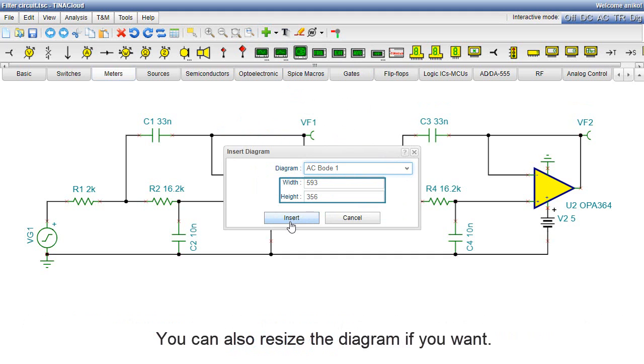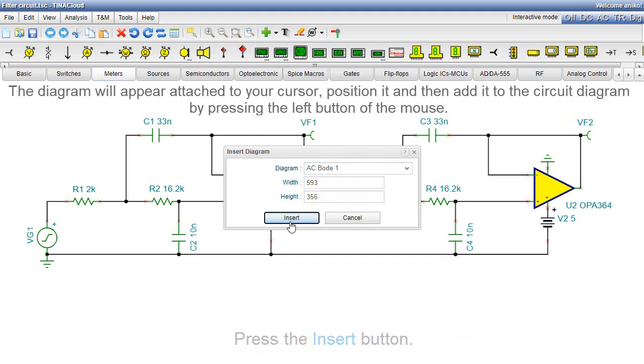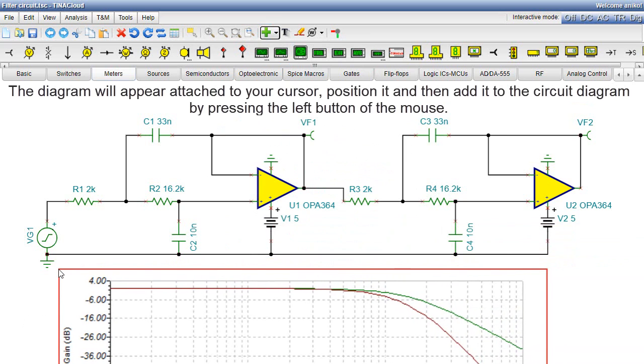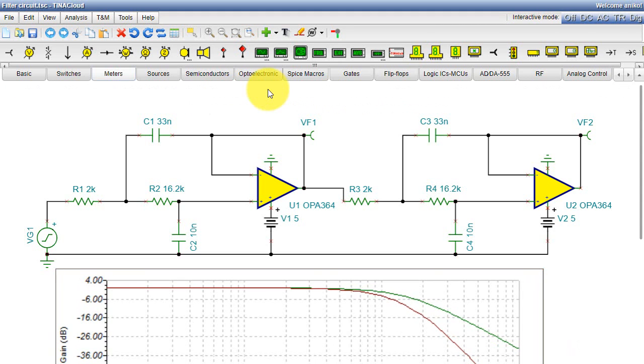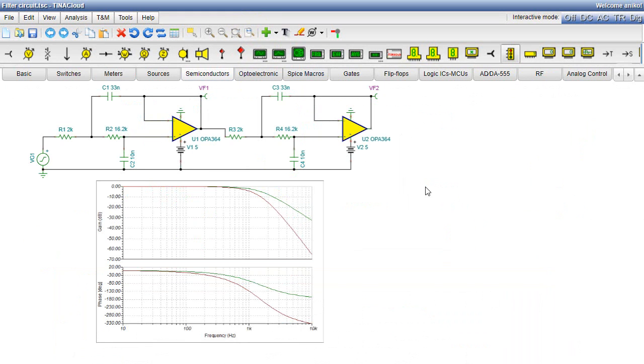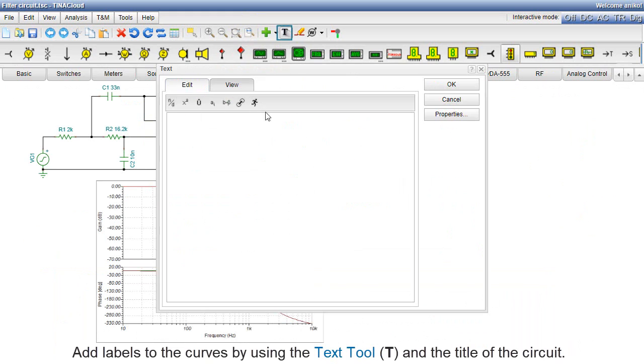You can also resize the diagram if you want. Press the Insert button. The diagram will appear attached to your cursor. Position it, and then add it to the circuit diagram by pressing the left button of the mouse. Use the Zoom All command so that all objects will be visible. Add labels to the curves using the Text tool, and the title of the circuit.